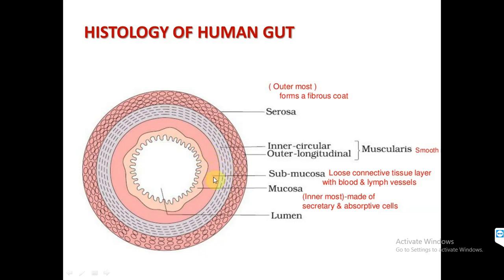The third layer is the submucosa, where a loose connective tissue layer is present along with blood vessels — the maximum blood supply is here. Then comes the mucosa, covered with a mucosal lining that protects the gut from HCl, the acid present in the stomach. The mucosa is made up of secretory as well as absorptive cells, so its function is mainly secretion and absorption. These four layers make up the gut wall, with the lumen being the hollow void space inside.